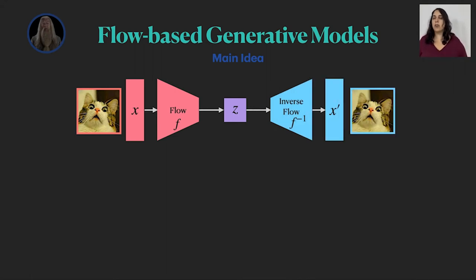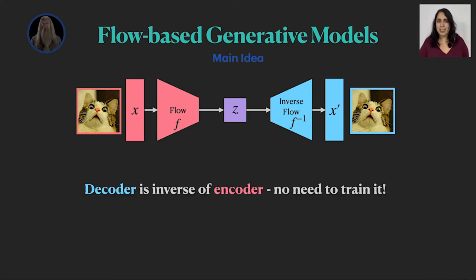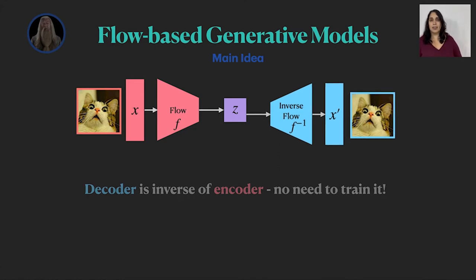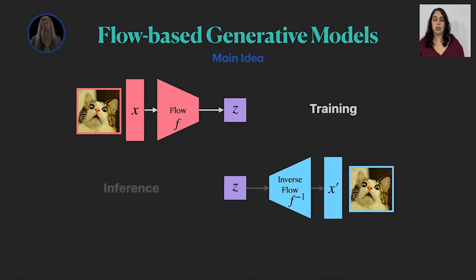Only now we call our encoder a flow, and it implements a function f, and our decoder is the inverse flow that implements the exact inverse function. This means that we don't really need to learn the decoder. It's enough to train a single network during training, which is our flow, and in inference, we can just invert this learned function to generate new images.